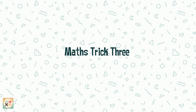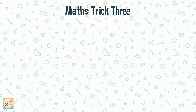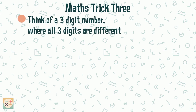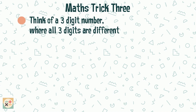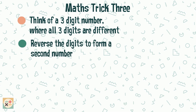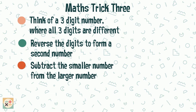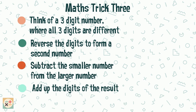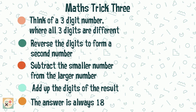Let's have a look at this final magic maths trick. Think of a three digit number — all three digits must be different. Reverse the digits to form a second number. Subtract the smaller number from the larger number. Now add up all the digits in this result. Your answer will be 18.